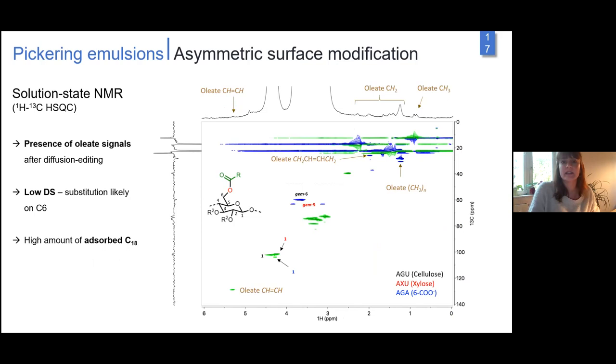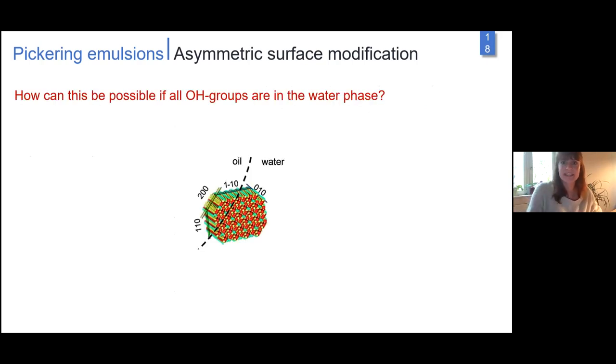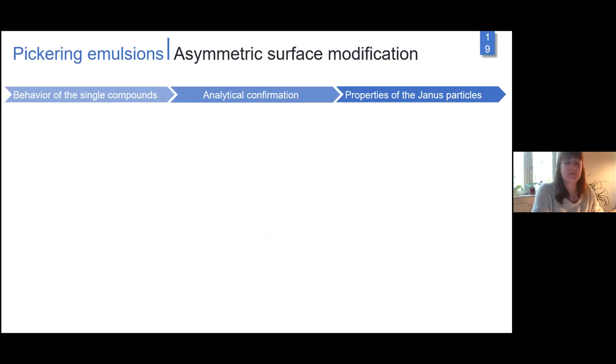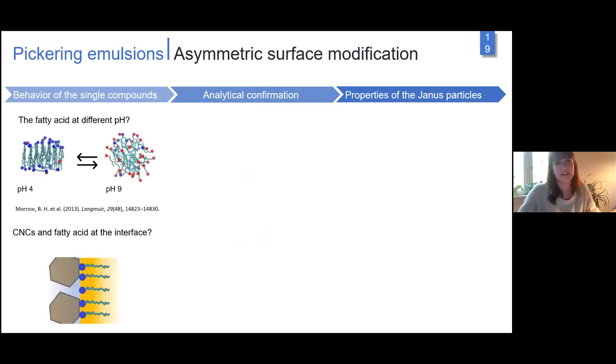To gain more information, we did solution state NMR in ionic liquids. You see here HSQC, the direct correlation between proton and carbon. In the F2 dimension you see the diffusion edited proton spectrum. From diffusion editing, we edited out everything absorbed to the surface. We see our covalent modification: we introduced oleyl chains, likely to the C6 groups. But we also observed a high amount of absorbed oleic acid to the surface.